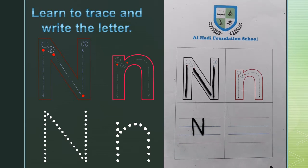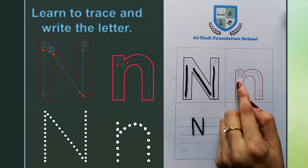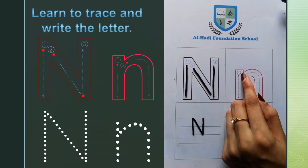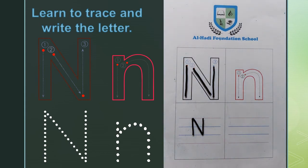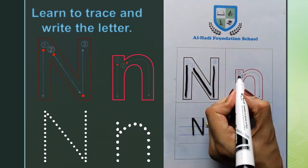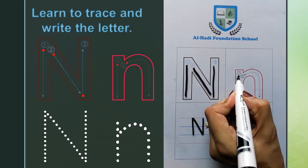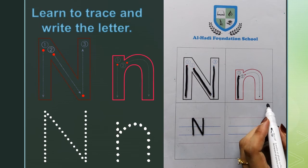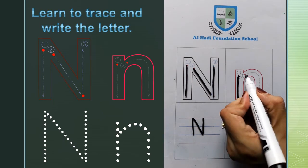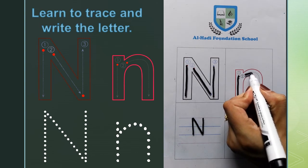Now we will learn small n — trace and write, following two steps. The two steps are shown in the picture. First, with your finger, trace small n. Put your finger on the first red dot and make a downward straight line. Now put on the other red dot and make a straight line. Now with your pencil, keep on the first red dot — straight line — then the other red dot — straight line.